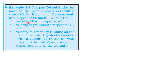What is the velocity of B with respect to A? Velocity of ground with respect to B. Velocity of a monkey running on the roof of train A against the direction of motion with a velocity of 18 kmph with respect to train A, as observed by a man standing on the ground.